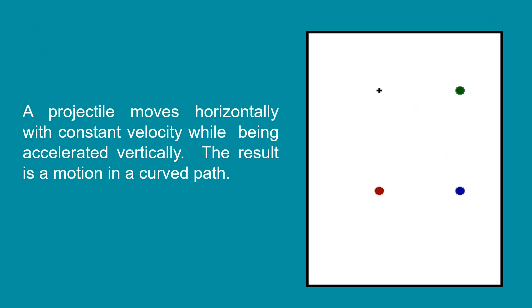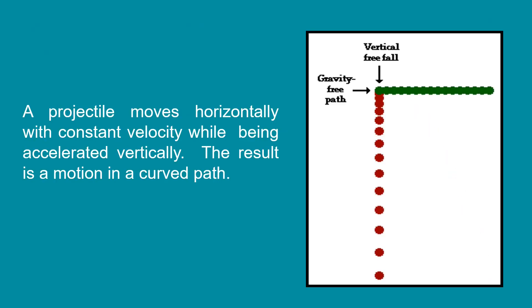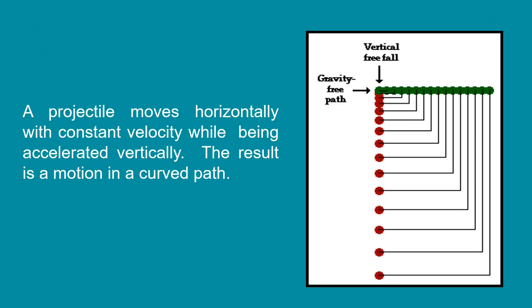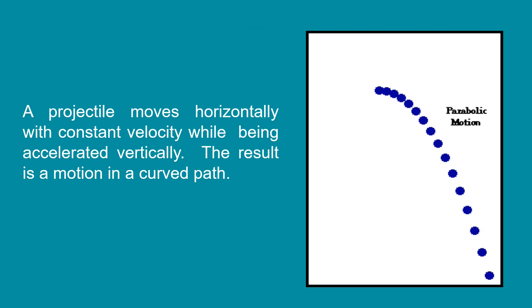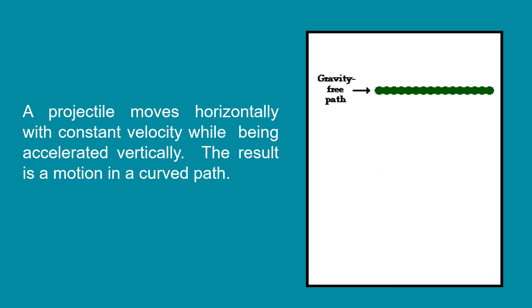which is equivalent to negative 9.8 meters per second squared. A projectile moves horizontally with constant velocity while being accelerated vertically. The result is a motion in a curved path.